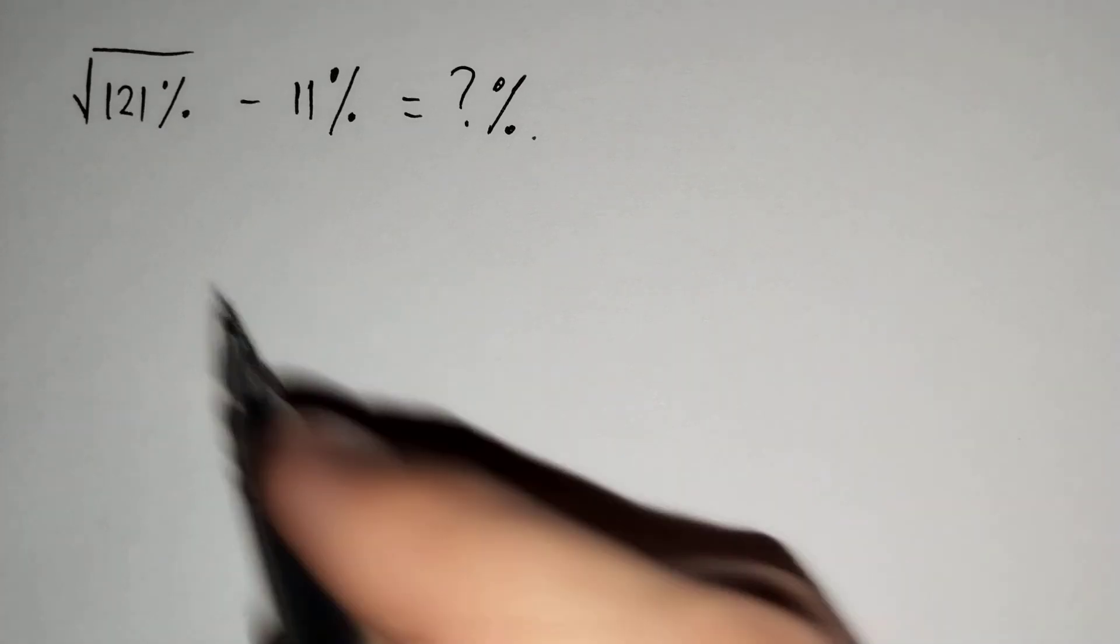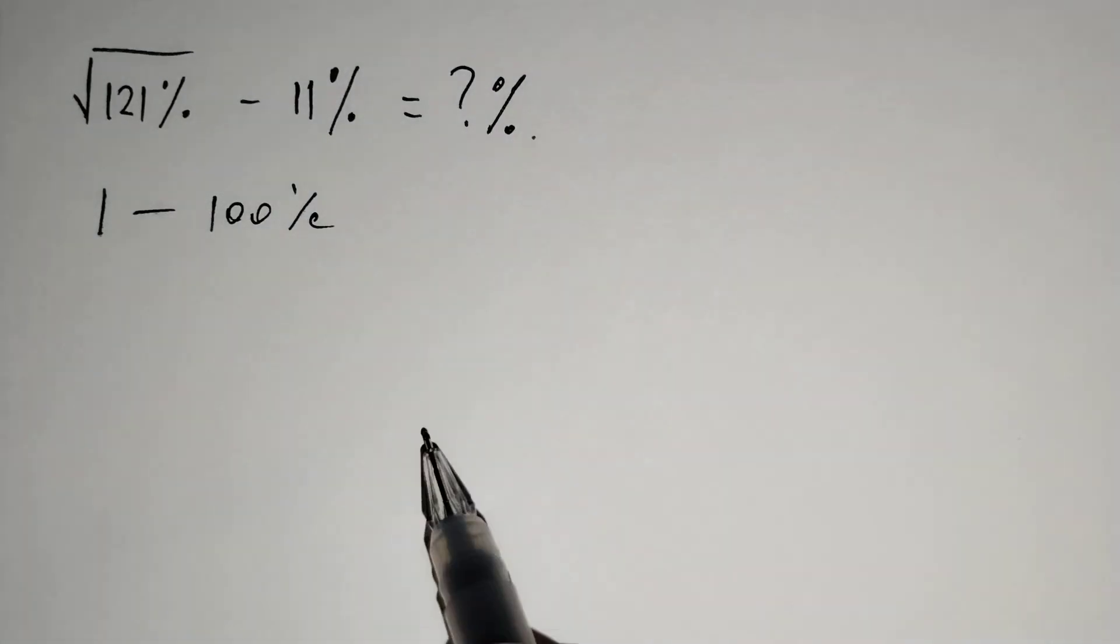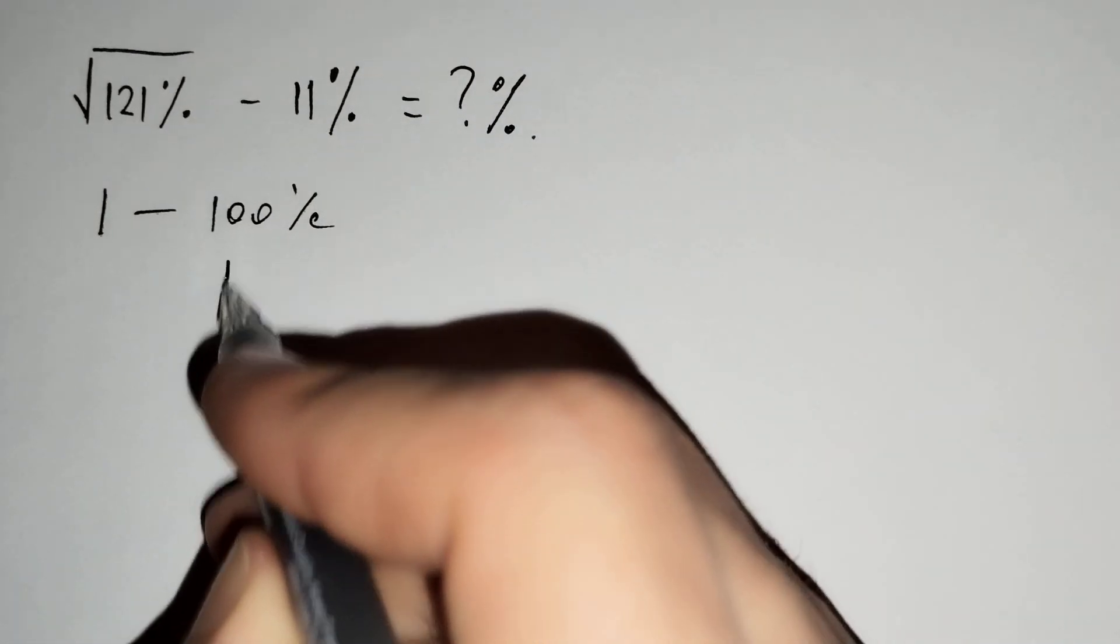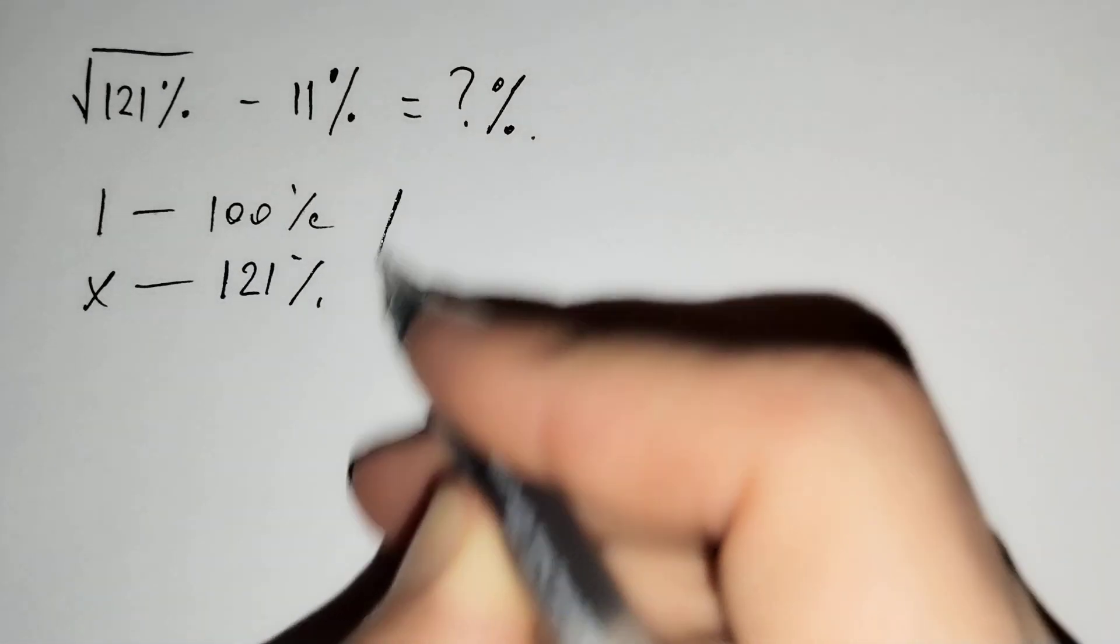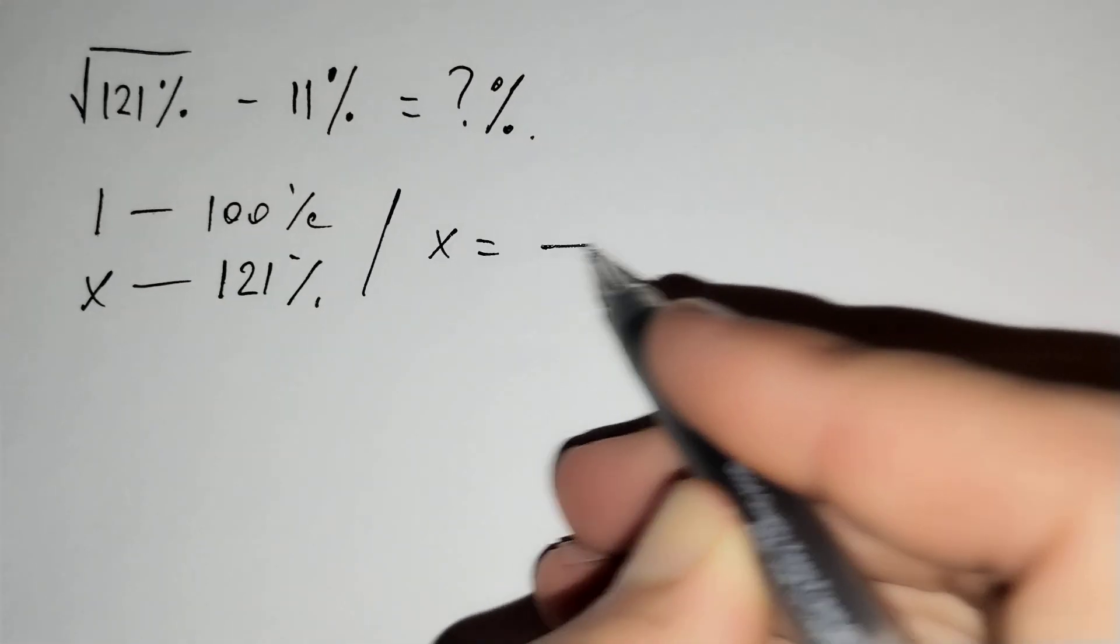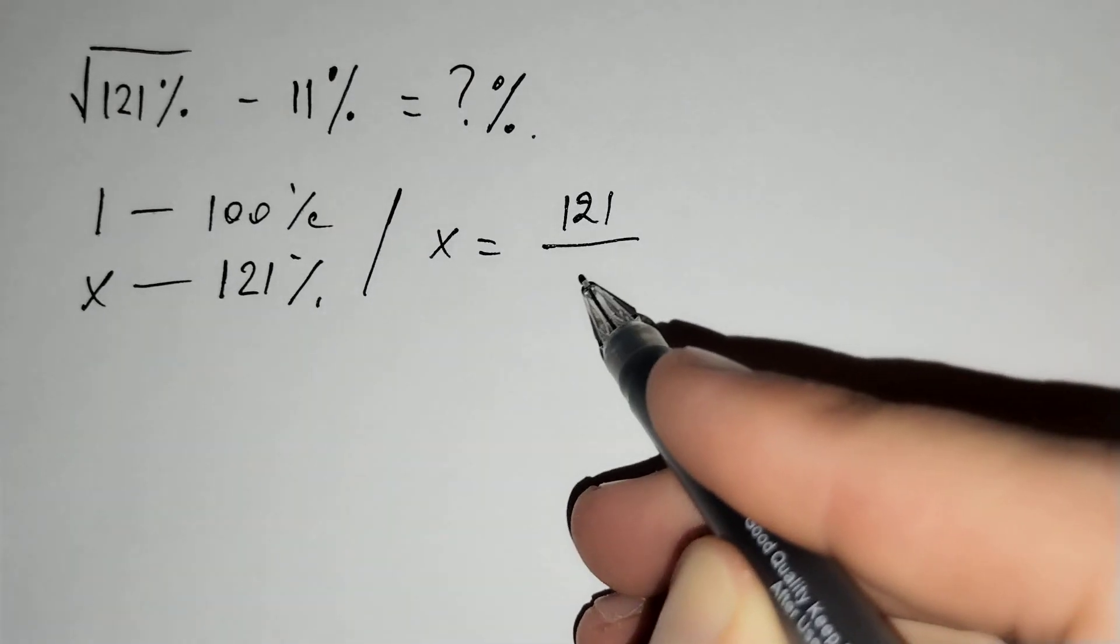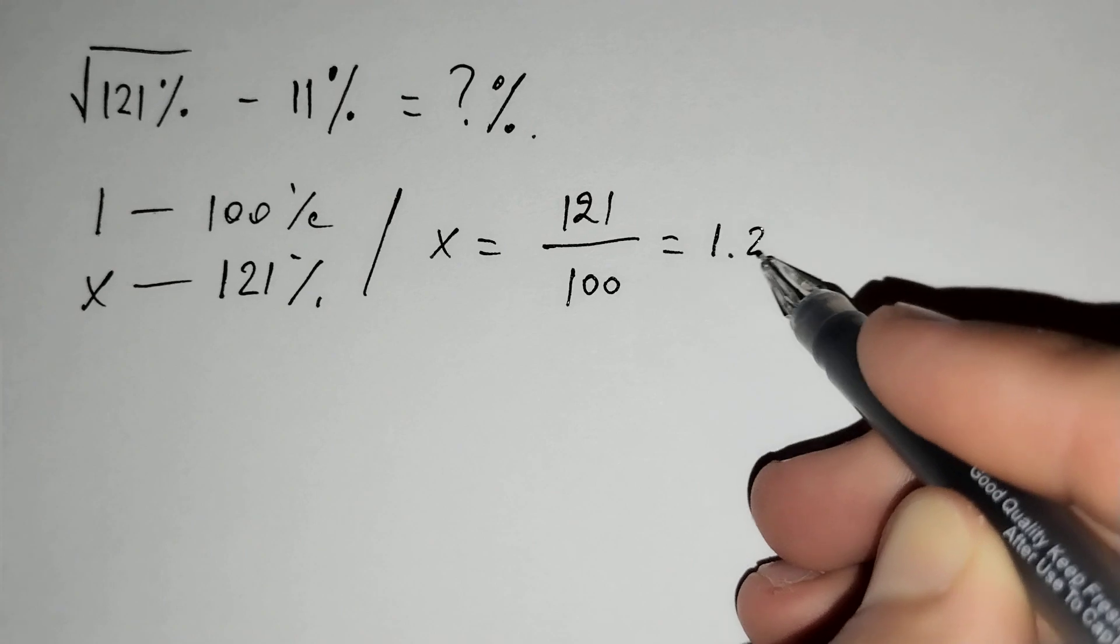Firstly, we know that 1 equals to 100% and for this 121% equal to x. And if we find x from here, x equals to 121 over 100 and it does 1.21.